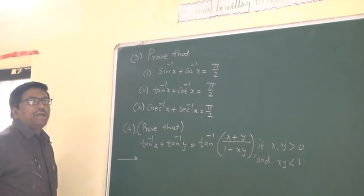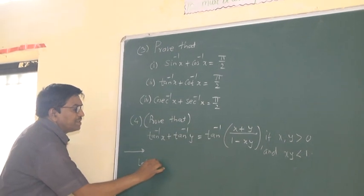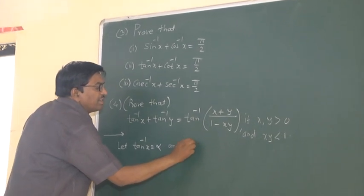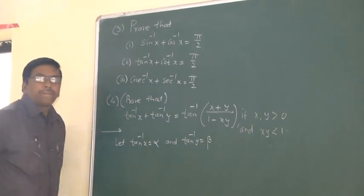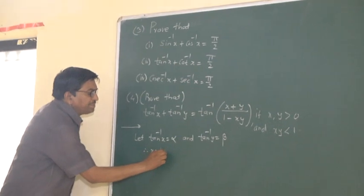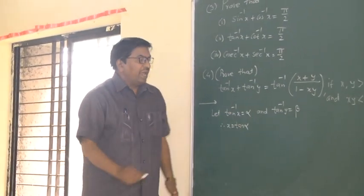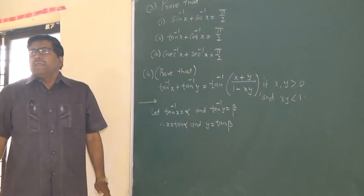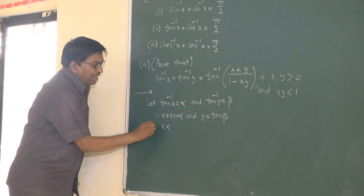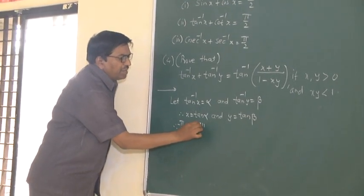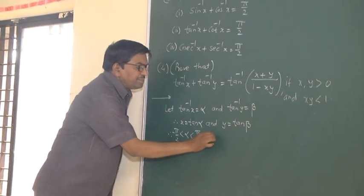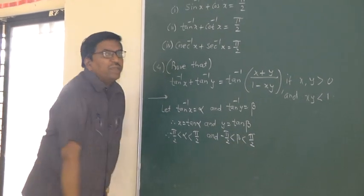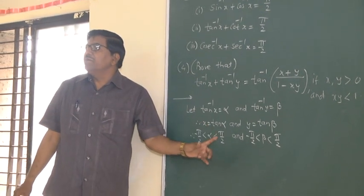Proof. Let tan inverse x equal alpha and tan inverse y equal theta. Therefore, x equals tan alpha and y equals tan theta. Therefore, alpha is greater than minus pi by 2 and less than plus pi by 2, and similarly beta is greater than minus pi by 2 and less than plus pi by 2. Why? Because we are considering the principal branch of tan inverse.